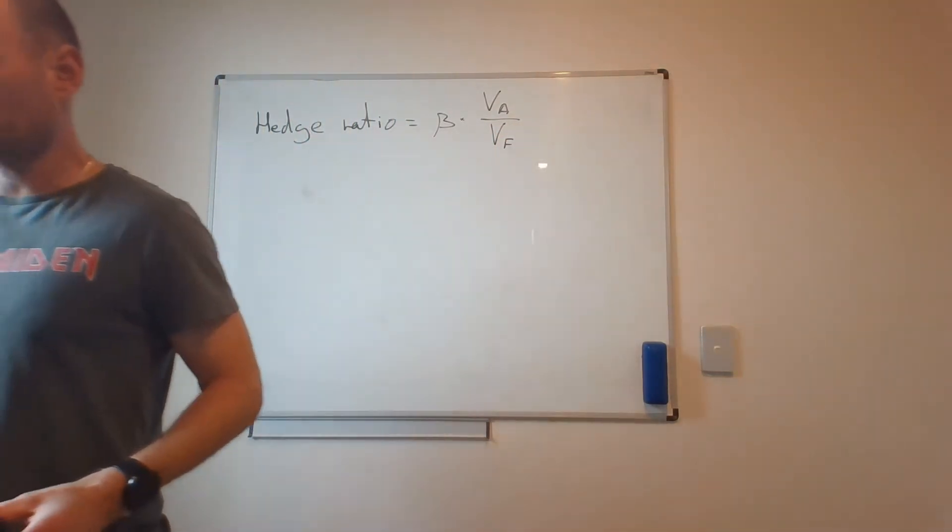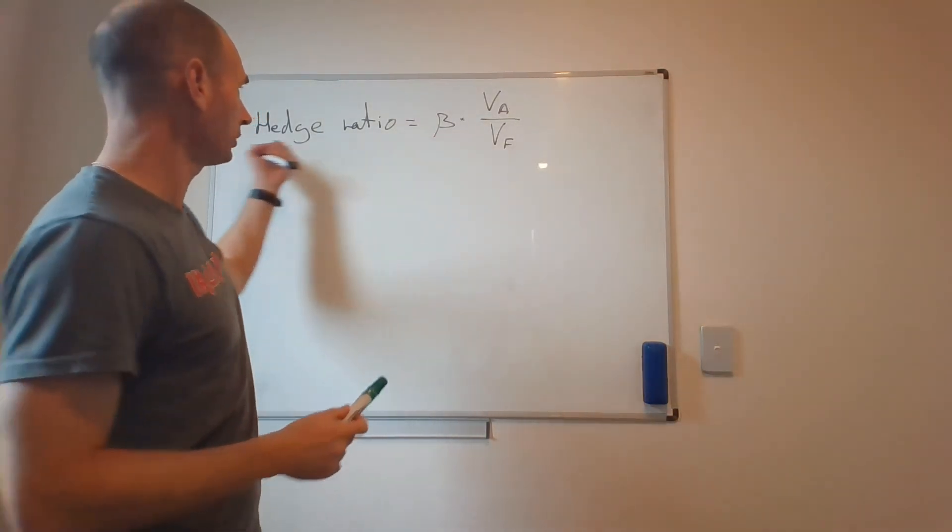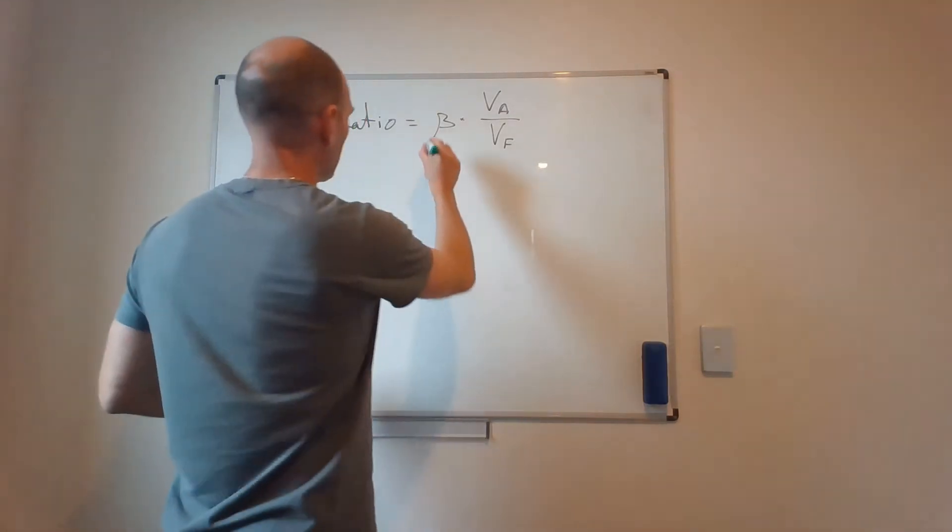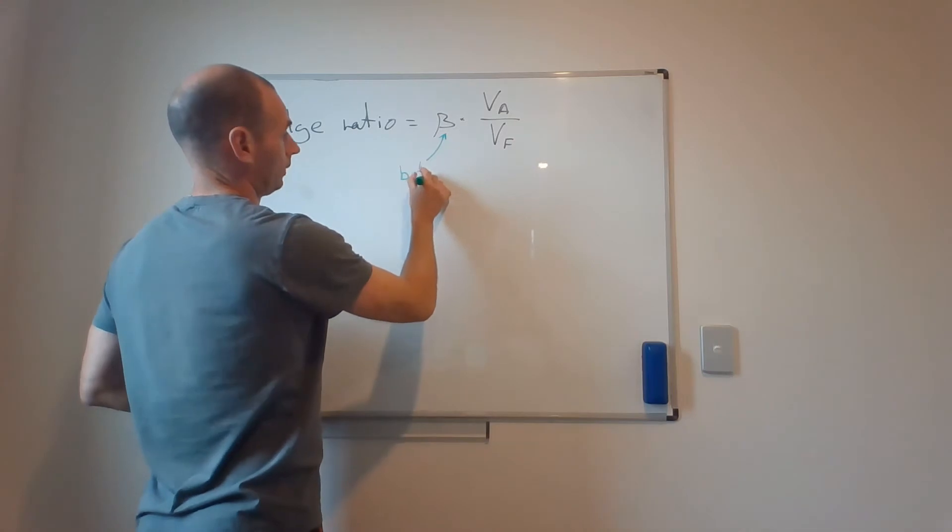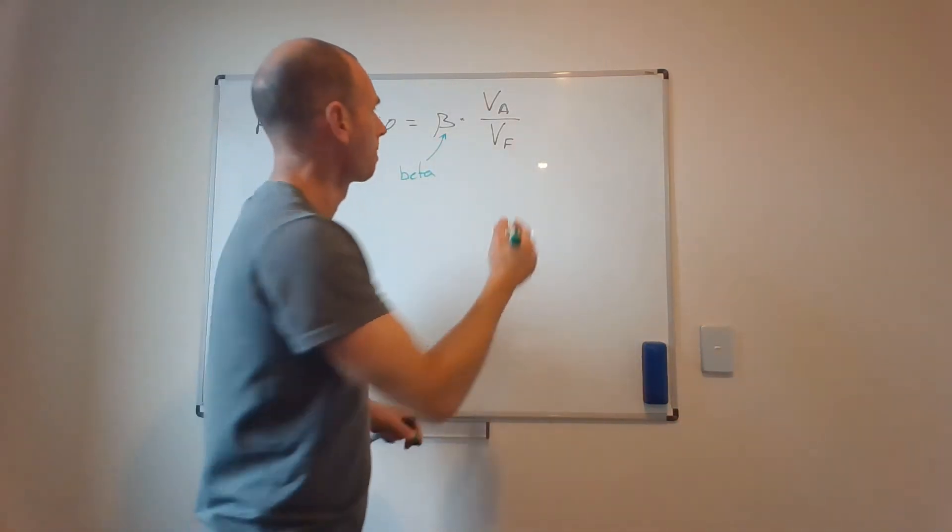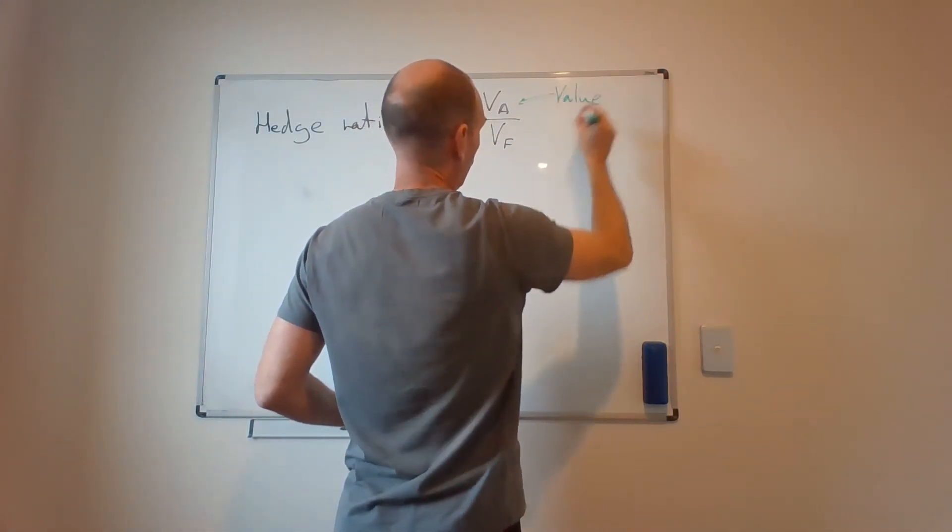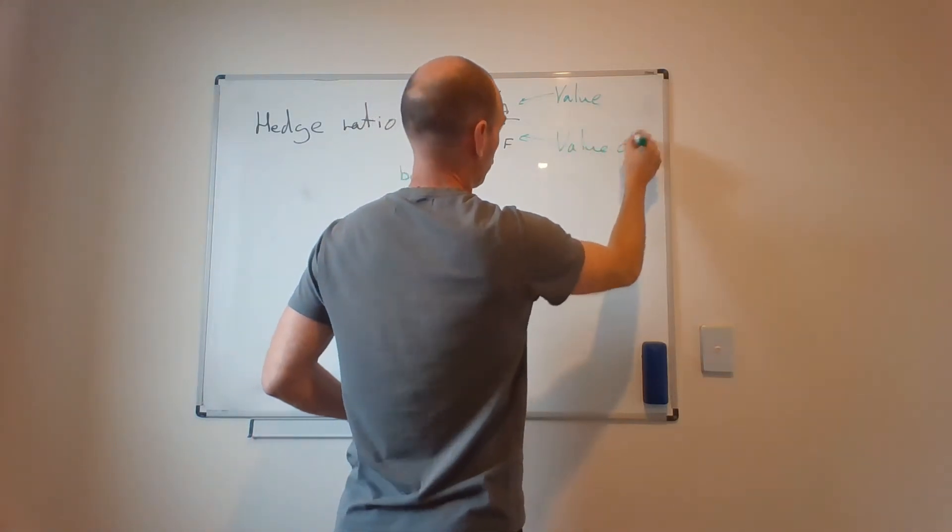And this is the optimal hedge ratio - the optimal number of contracts for your stock portfolio. So what is this? This is your beta, how aggressive or defensive is your portfolio. This is the value of your portfolio and this is the value of the futures contract.